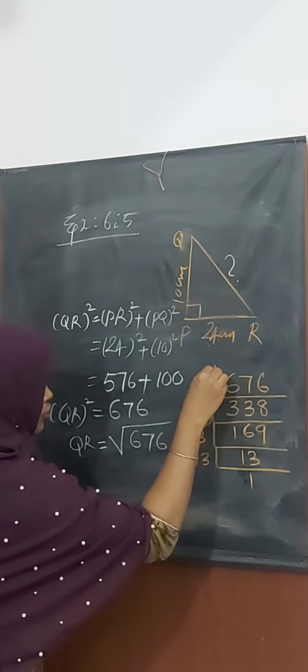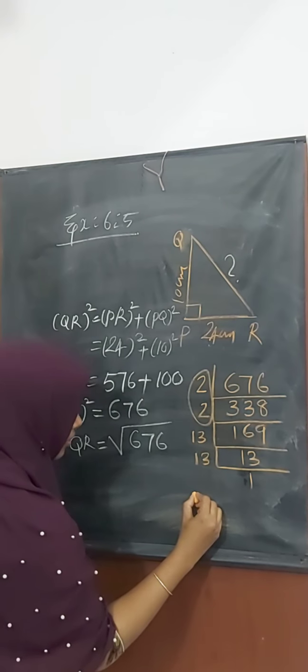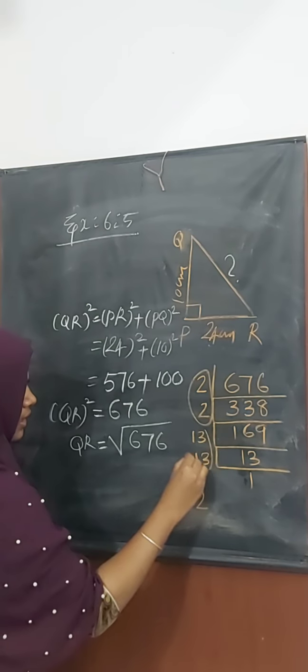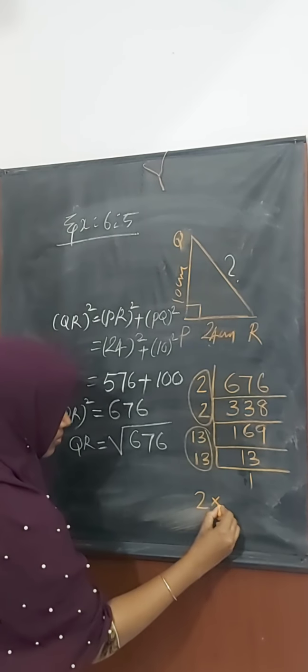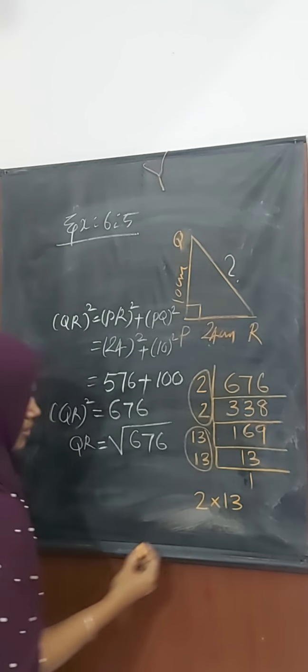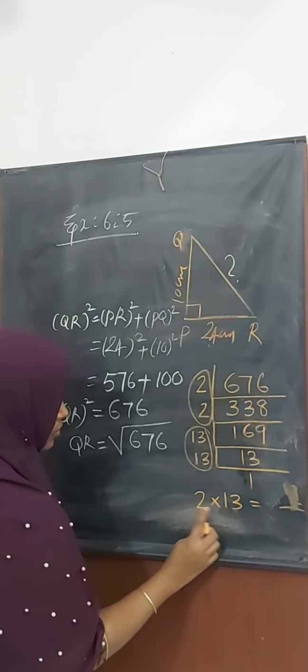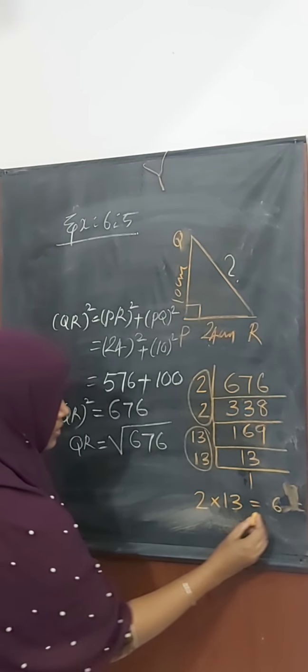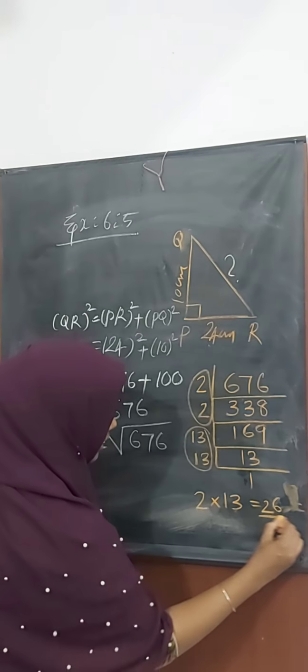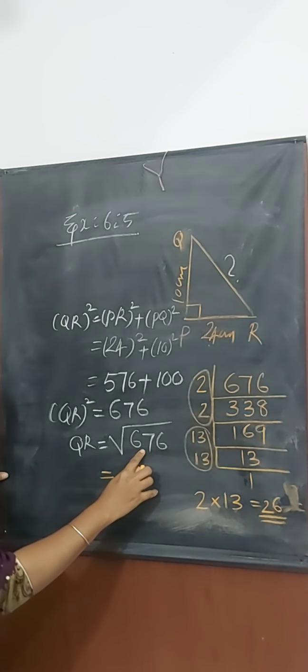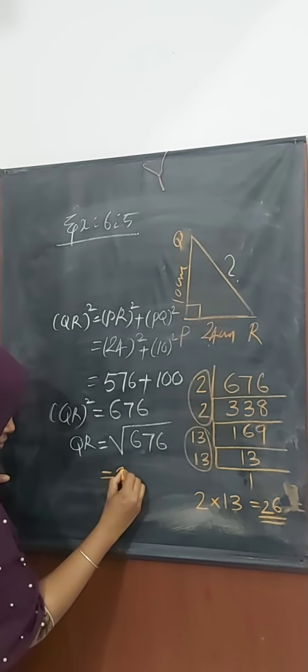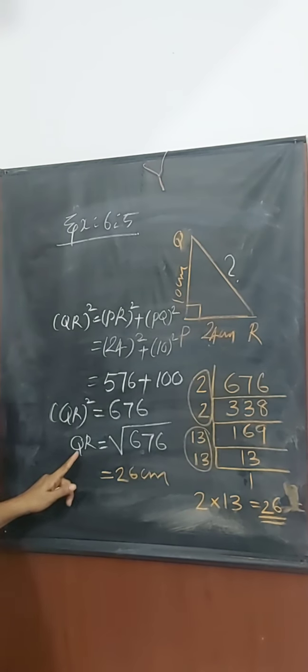2 is 2 times, we take only 1 time. We take 1 time. 3 into 2, 6. 1 into 2, 2. We get 26. We get root 676 equals 26. That means QR equals 26 centimeters.